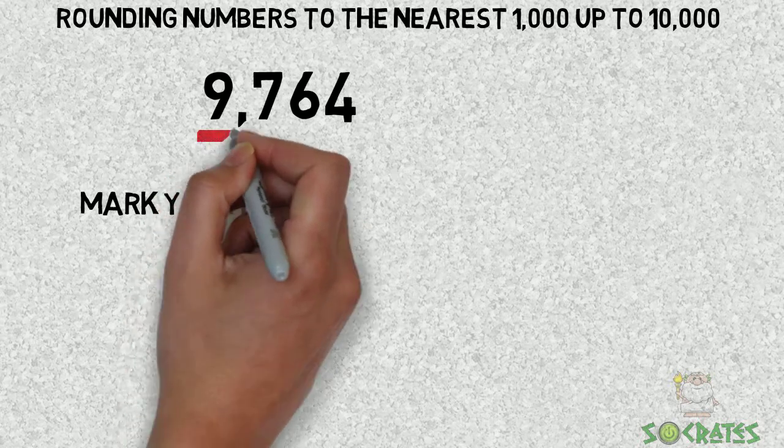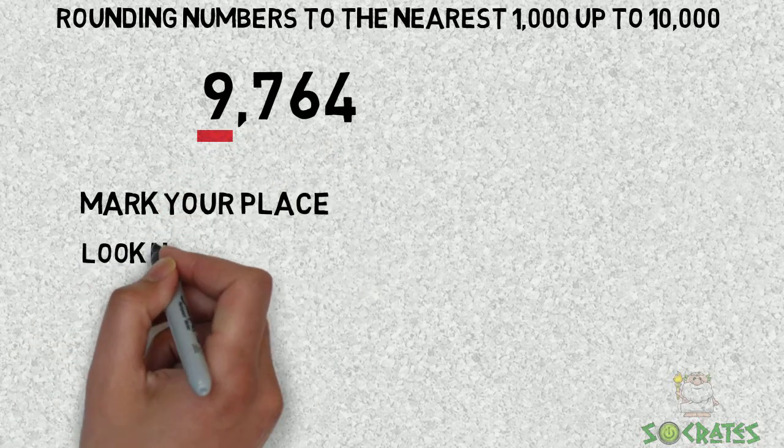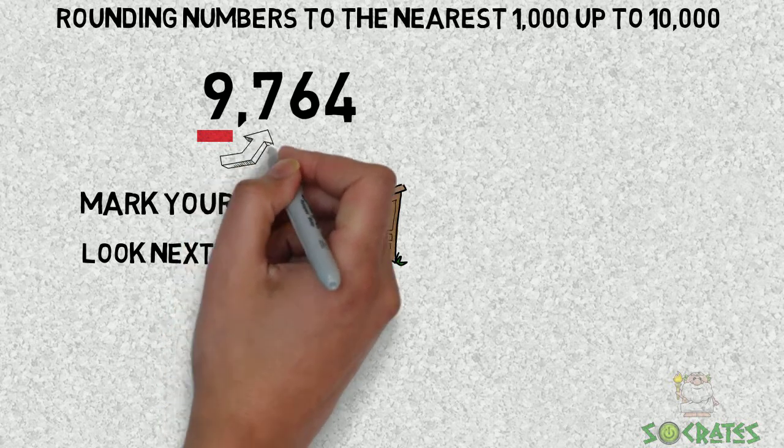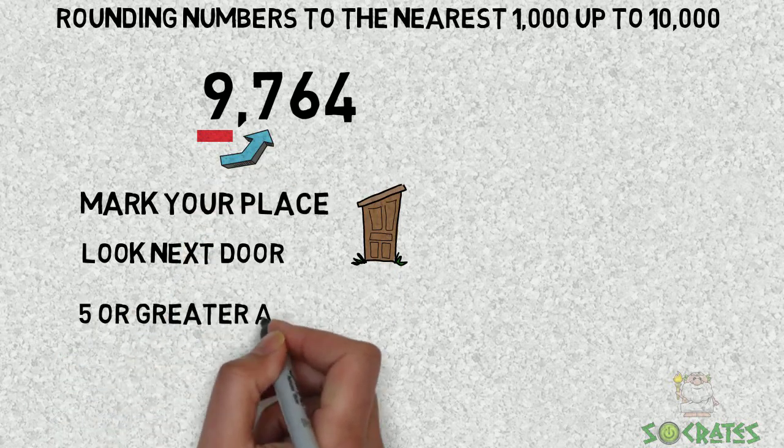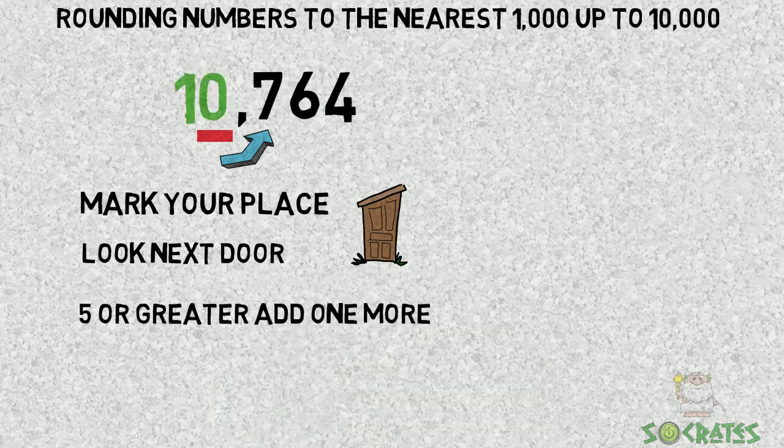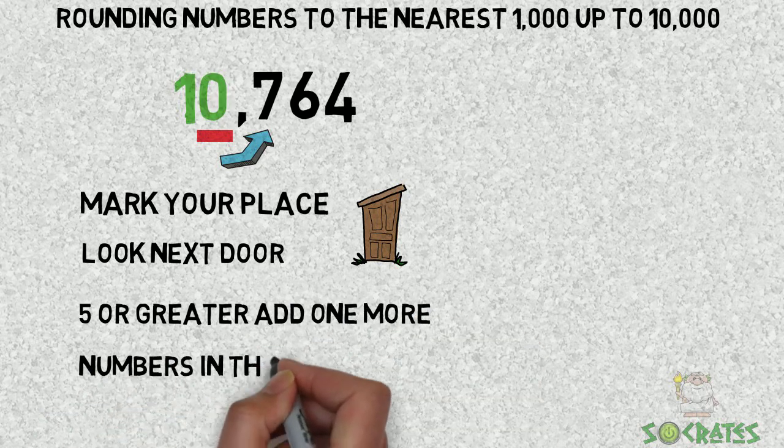Mark your place which is the nine because it's in the thousands place. Look next door at the seven which is five or greater. Add one more. Nine with one more is ten.